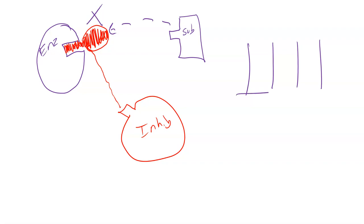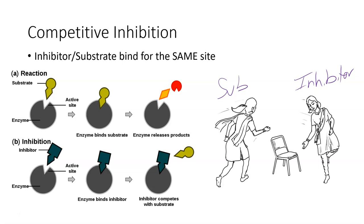Think about this like car parking spaces. Sometimes you have a tiny car parked in a space, and as you're driving along you might think you have an empty space, but as you try to park you can't fit — there's something already there crowding up the space. That's how competitive inhibition works: the inhibitor and substrate are fighting for the same site.